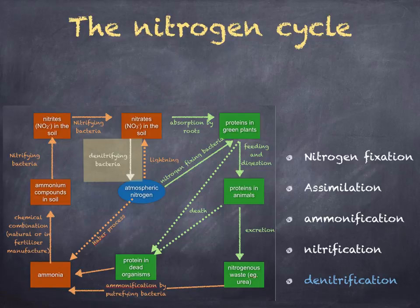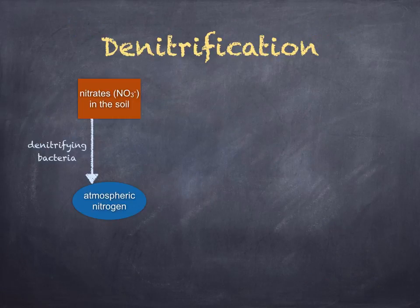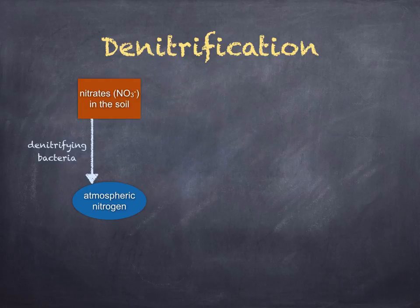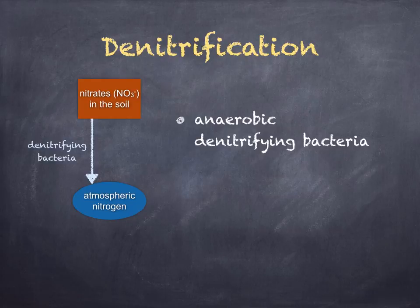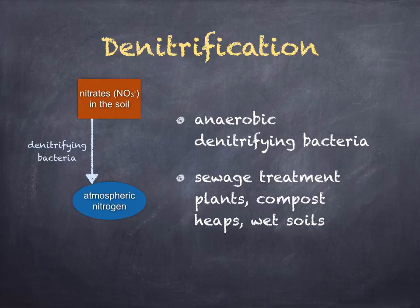Lastly, denitrification is the conversion of nitrates into atmospheric nitrogen. When soils become waterlogged, there's a short supply of oxygen, so a different type of bacteria takes over. Fewer nitrifying and free nitrogen-fixing bacteria are found, so there's an increase in anaerobic denitrifying bacteria, and these reduce soil nitrates into gaseous nitrogen, reducing the available nitrates in the soil for plants. These bacteria are common in sewage treatment plants, compost heaps, and wet soils.